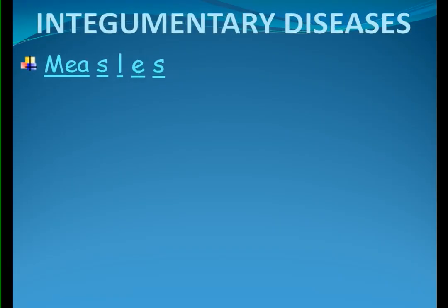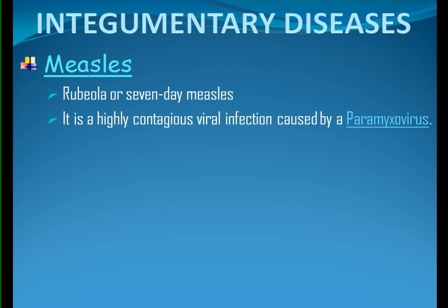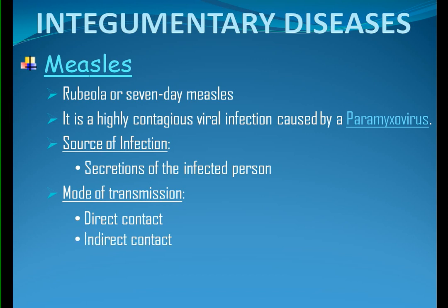Number 1 is measles. It is also called rubeola or 7-day measles. It is a highly contagious viral infection caused by a paramyxovirus. Source of infection: secretions of the infected person. The virus lives in the nose and throat of the infected person. Mode of transmission: direct contact with infectious droplets, indirect contact with contaminated surfaces, and airborne. The virus can remain infectious in the air for around 2 hours after the infected person coughs or sneezes. The incubation period for measles is usually 10 to 14 days.